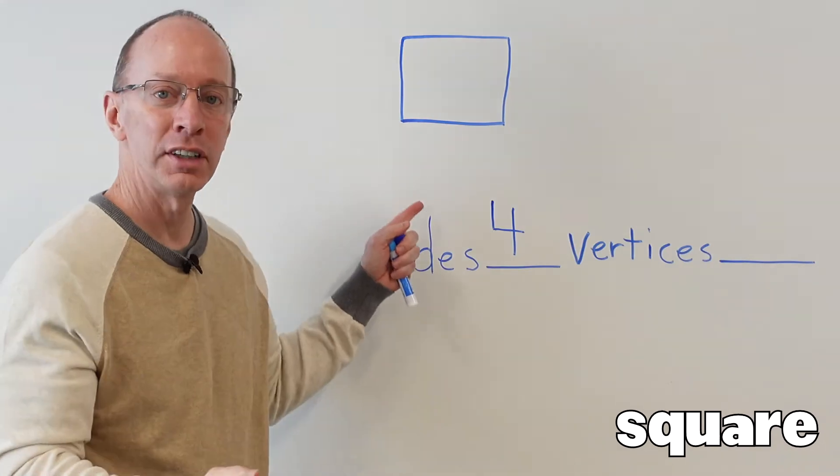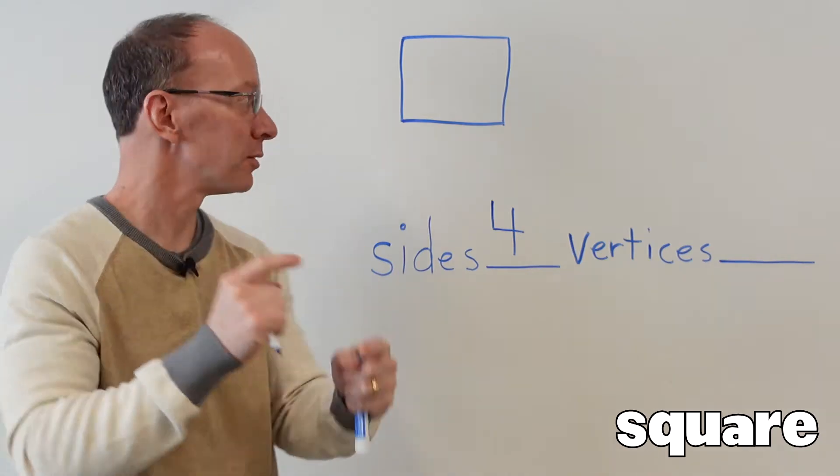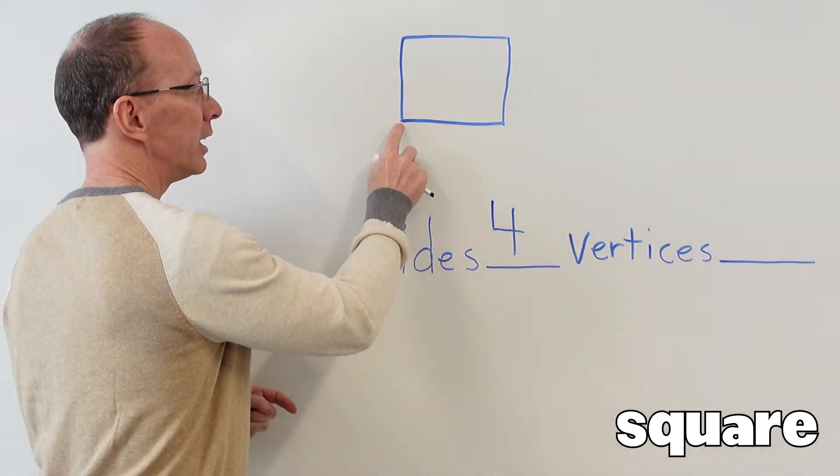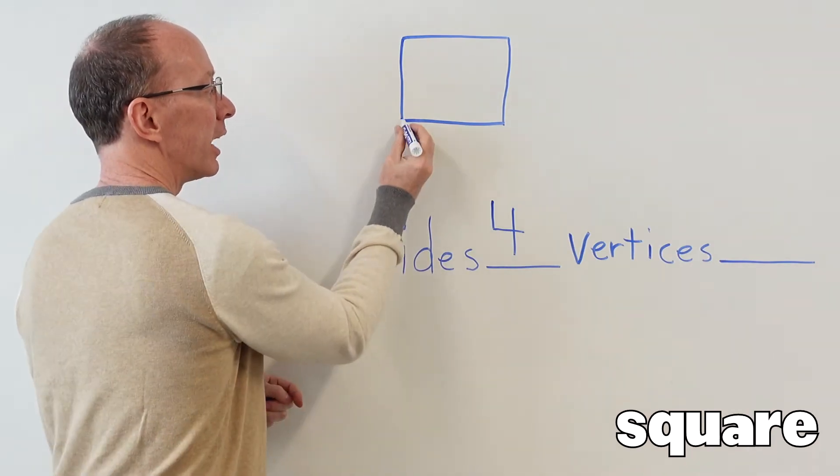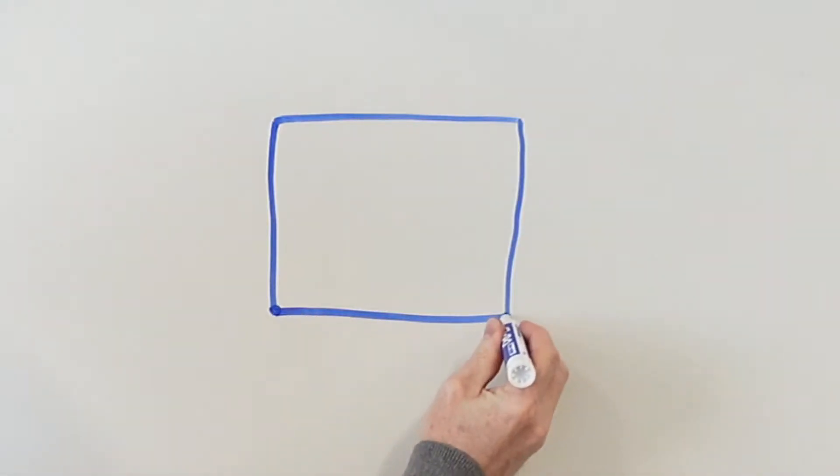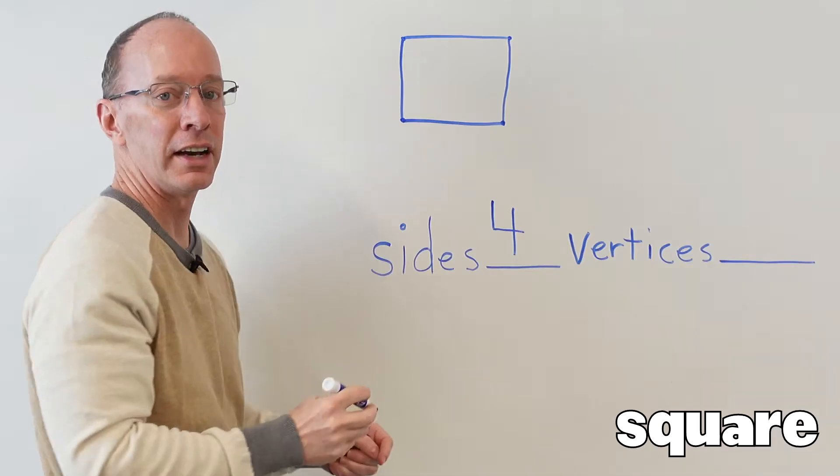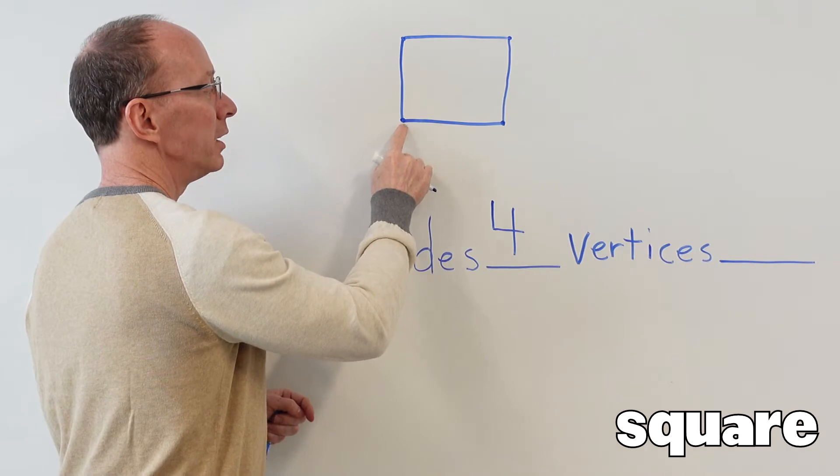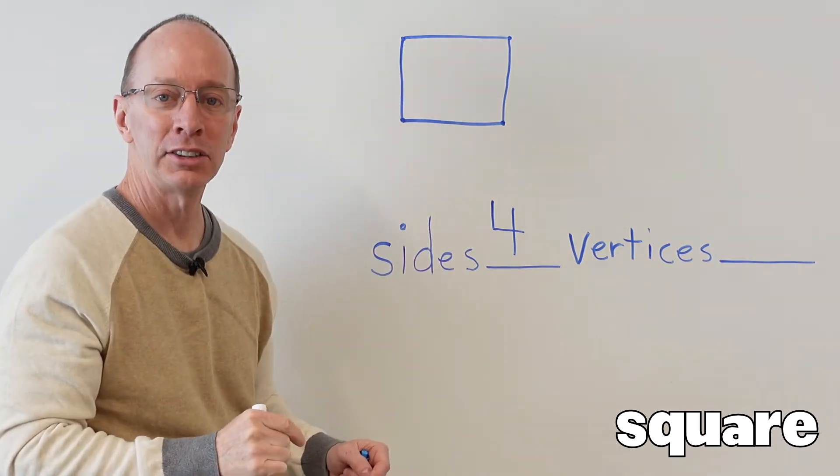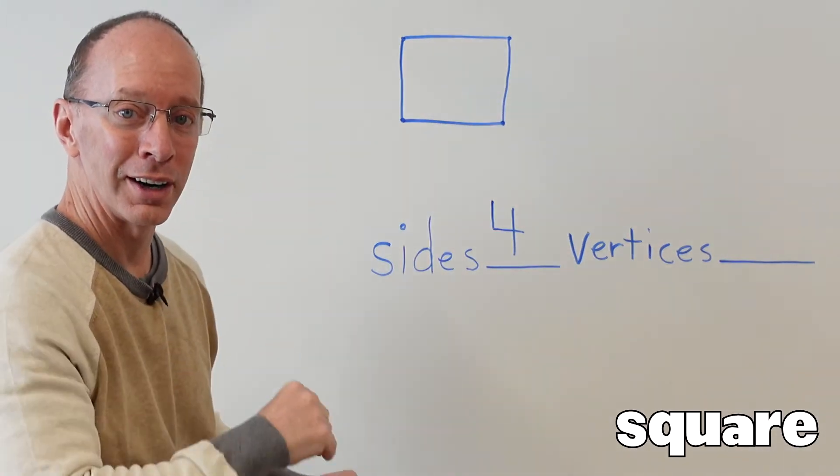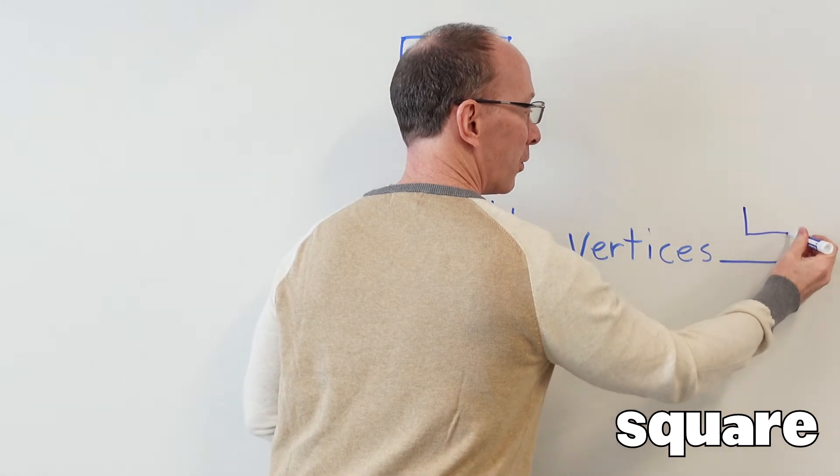And then vertices. A vertex is where two sides come together right here. So right in this little spot right there, in that little sharp corner, that is where a vertex would be. And there's another vertex here, and here, and there. So let's go ahead and count that. We have one, two, three, four. A square has four vertices. So I'm going to put my number four right there.